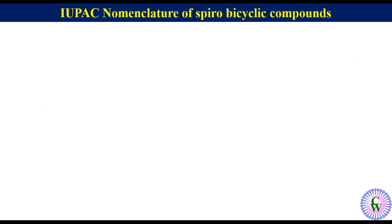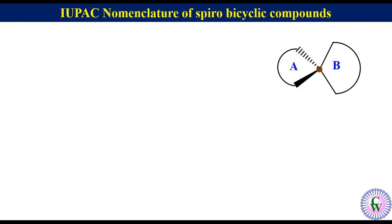Spirobicyclic compounds are bicyclic compounds in which two rings are connected through a single atom called the spiroatom. A spirobicyclic compound can be represented by a general structure like this. This atom where the two rings join is called the spiroatom.